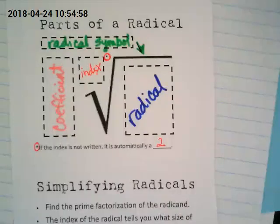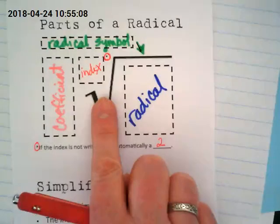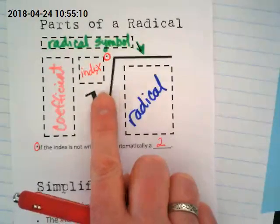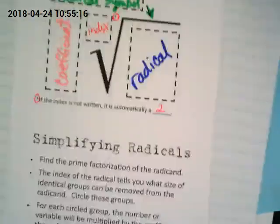When you look at this and there's nothing there and you've called it a square root, that's because there was an invisible two here. And that invisible two goes with the square. Today, we're going to start working with indexes that are different than two, as well as still working with two.